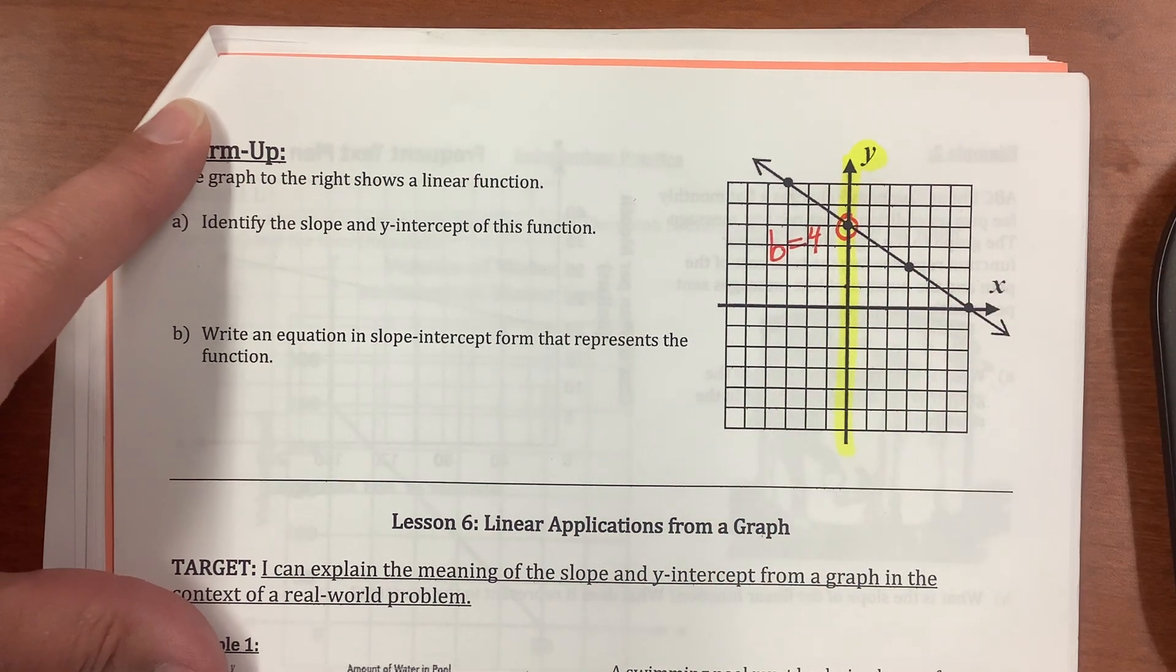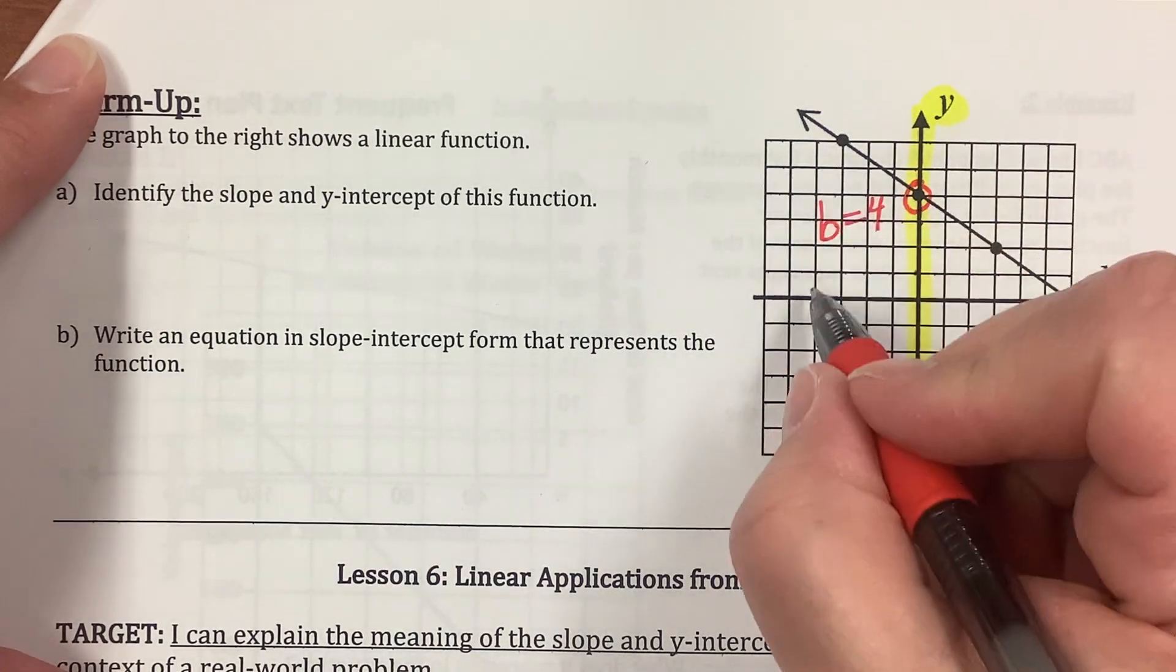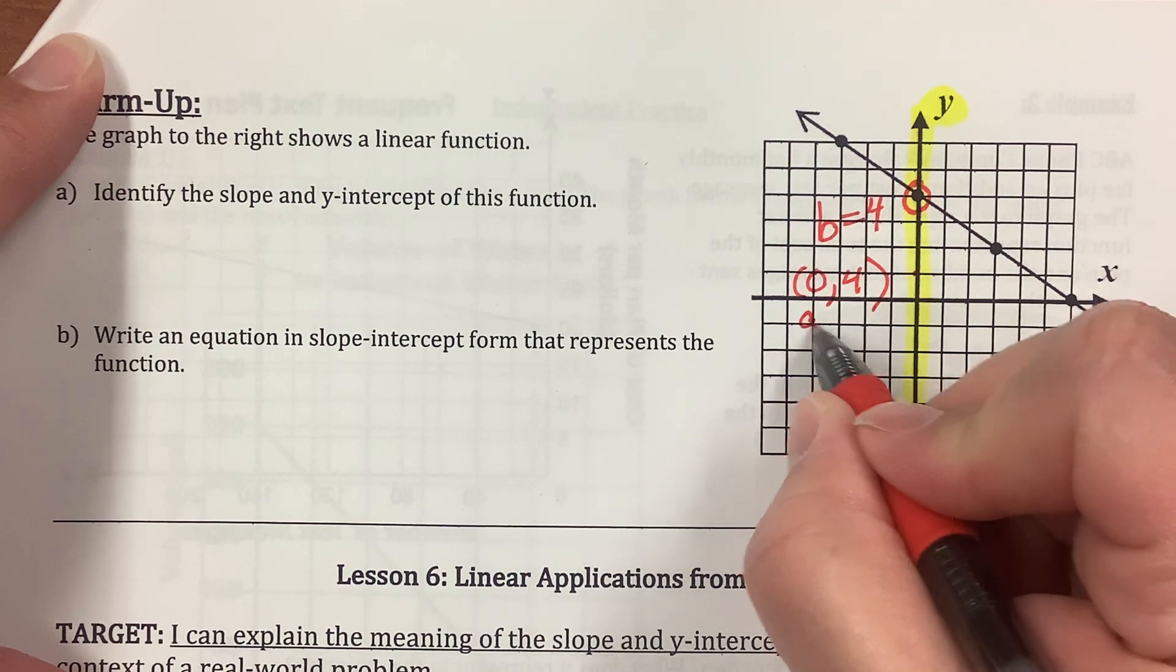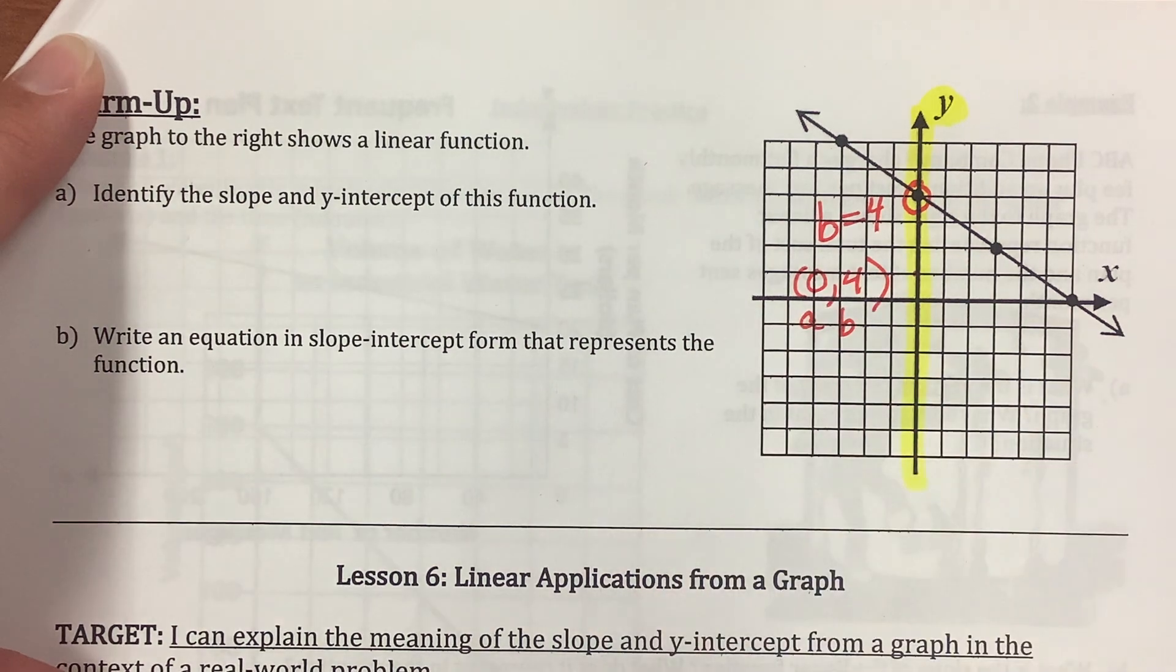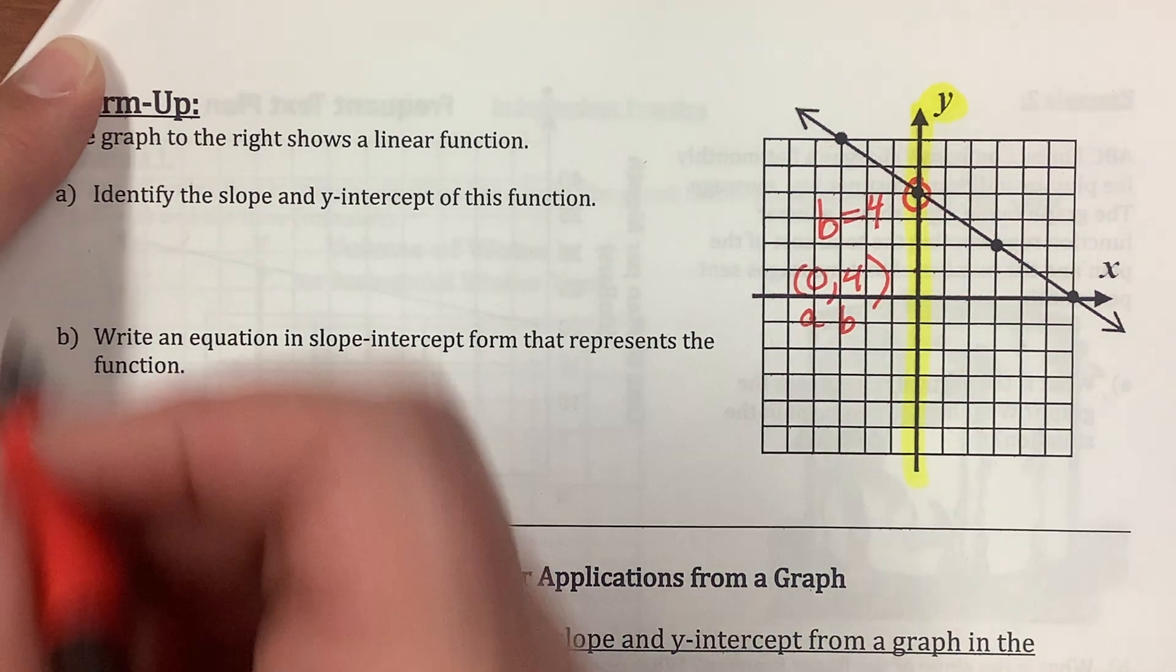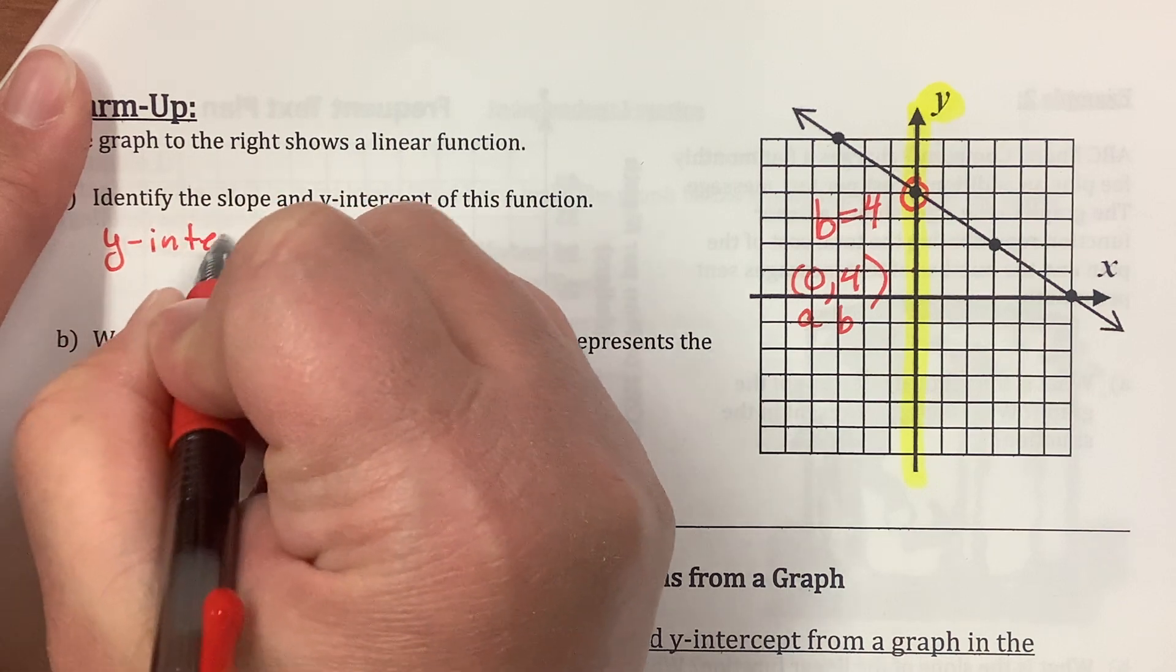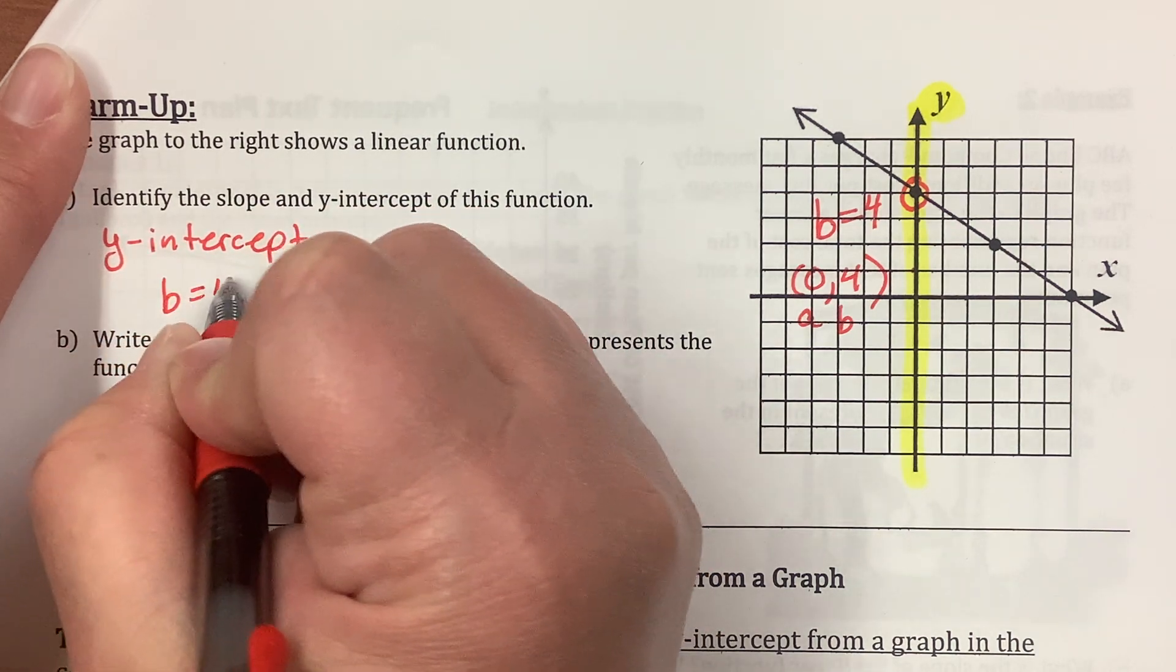b equals 4. So I know my y-intercept is going to be 4, because this point is 0, 4. x is 0, the y value is 4. So my y-intercept is b equals 4.